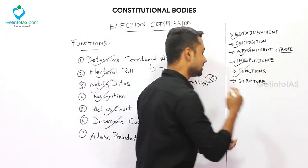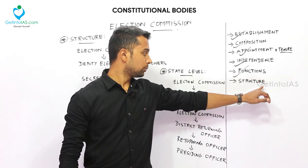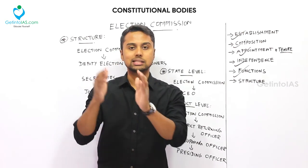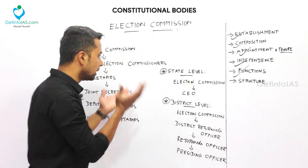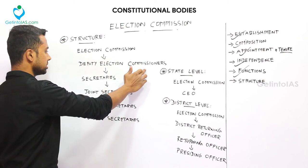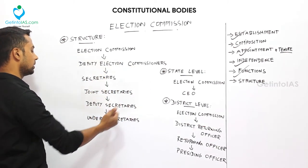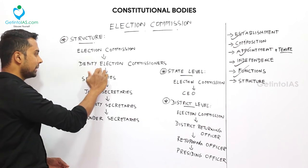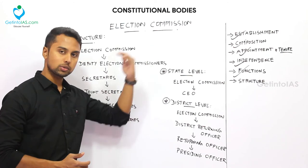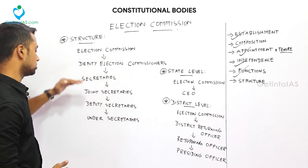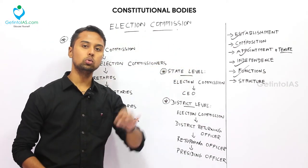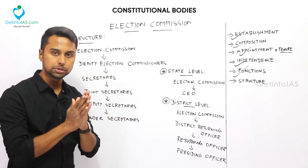Next, about the structure at the central, state, and district levels. At the central level, the hierarchy is: the Election Commission at the top — consisting of the Chief Election Commissioner and two other Election Commissioners — followed by Deputy Election Commissioners, Secretaries, Joint Secretaries, Deputy Secretaries, and Under Secretaries. From the Deputy Election Commissioner level downward, these positions are drawn from the civil services.